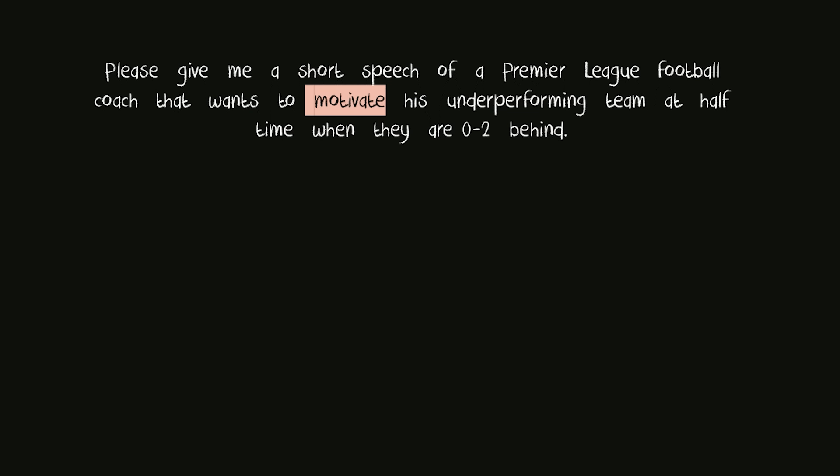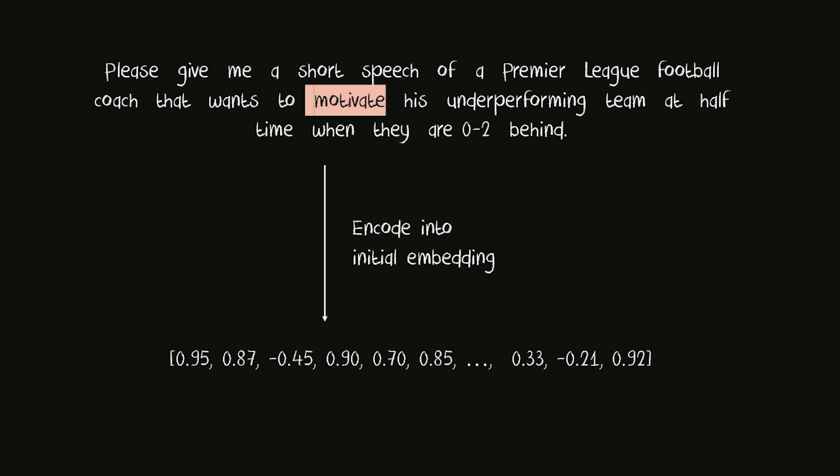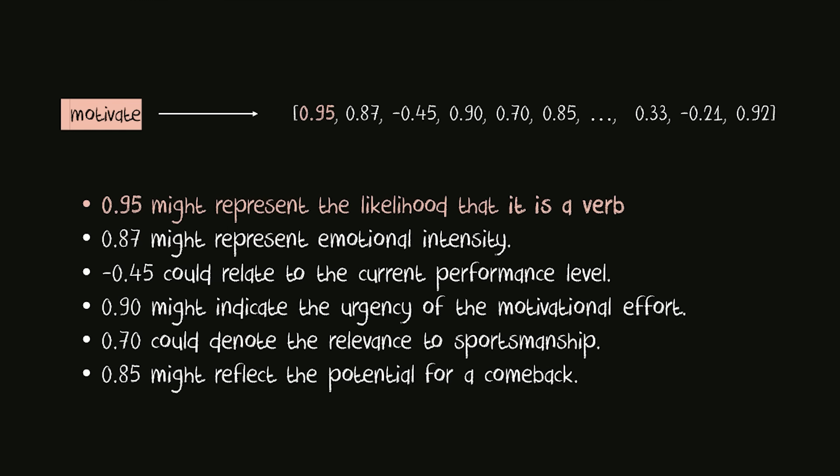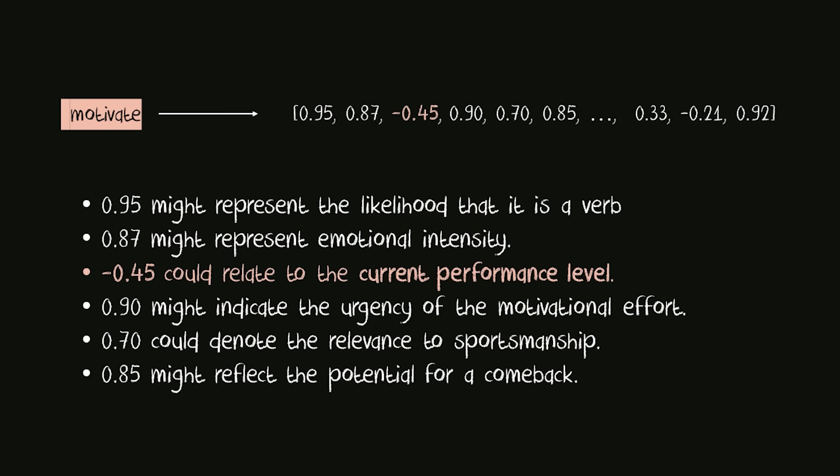So let's pick the token 'motivate' as an example. This can, for example, be turned into the following initial embedding. The numbers in this embedding vector represent the complex semantic properties of a token. 0.95 might represent the likelihood that the token is a verb. 0.87 might represent emotional intensity of a word. Minus 0.45 could relate to the current performance level. And in this way, a huge amount of numbers in every embedding represent the detailed, complex semantics of a word.